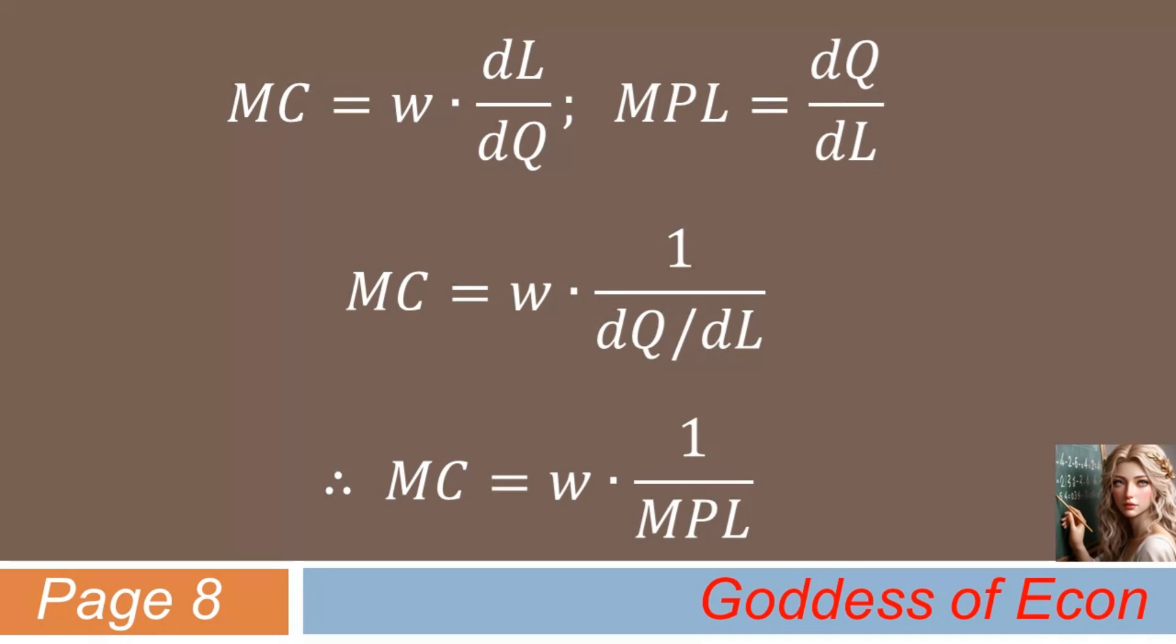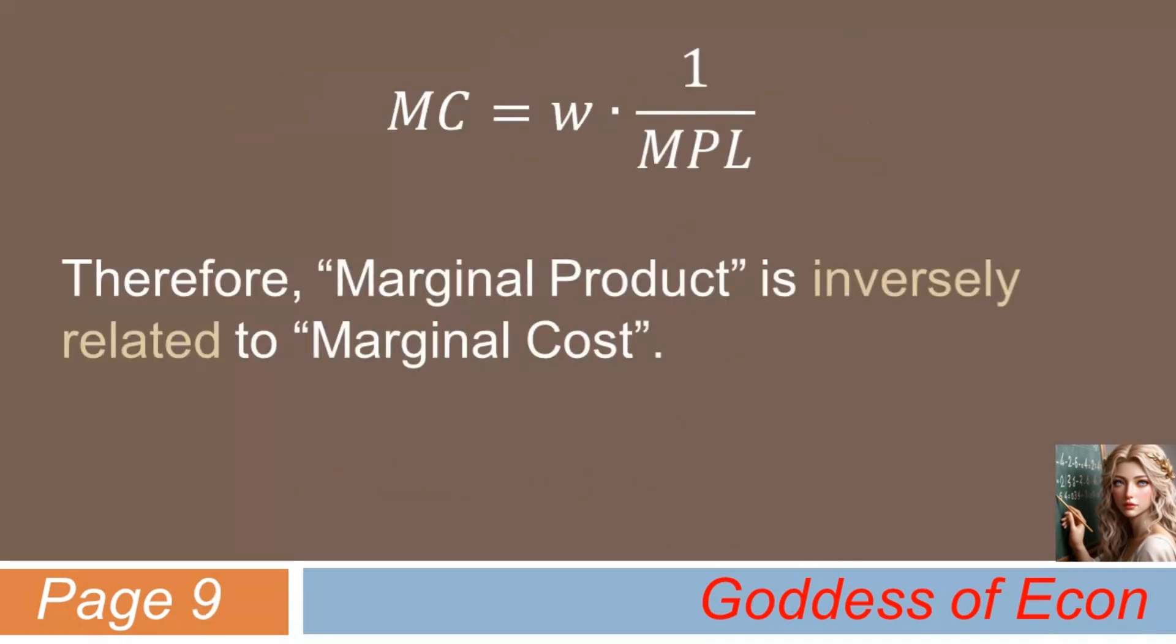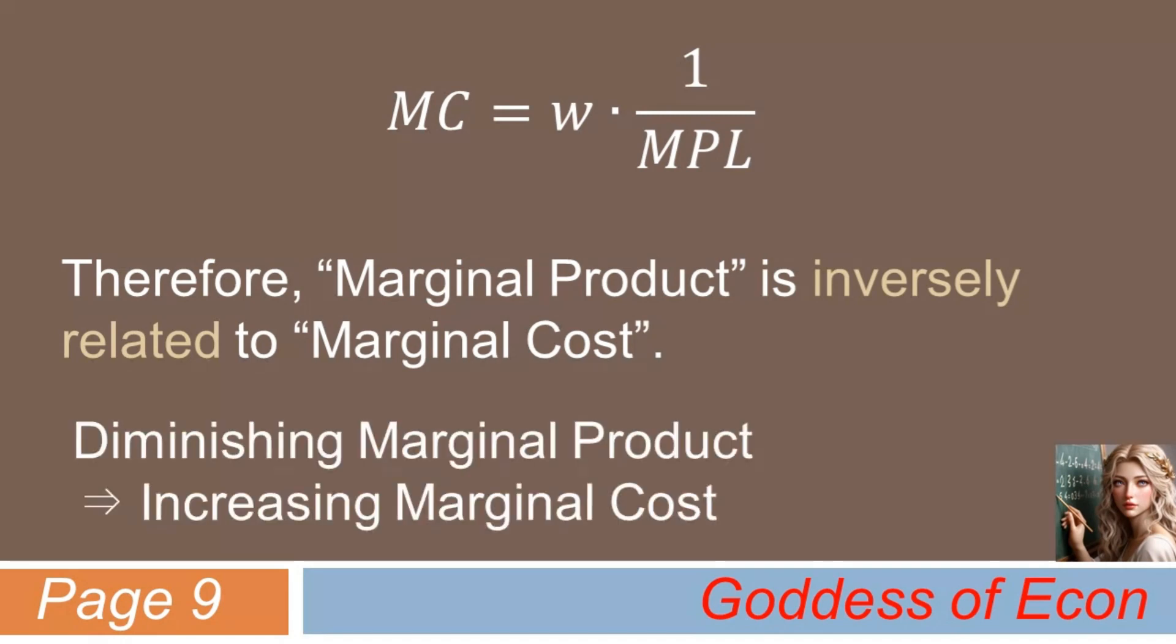So, it is quite clear that MPL and MC are inversely related to each other. This in turn implies that diminishing marginal product is associated with increasing marginal cost.